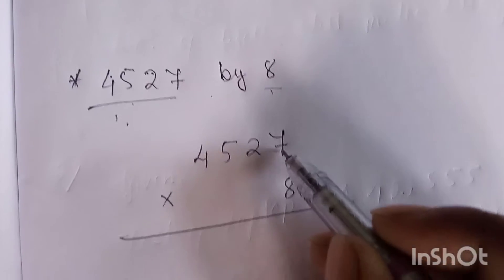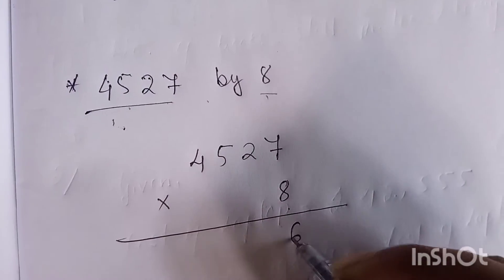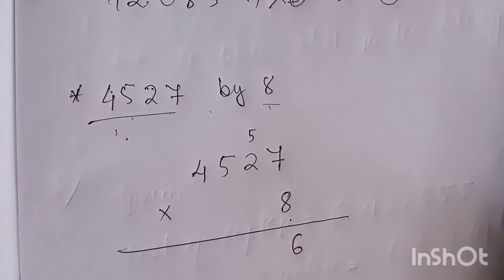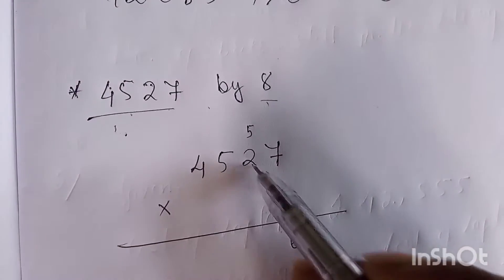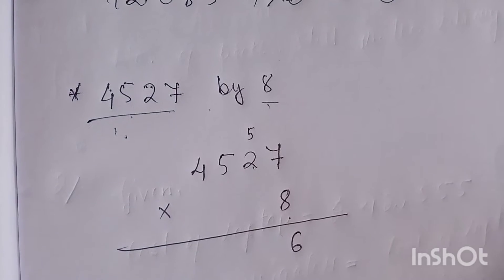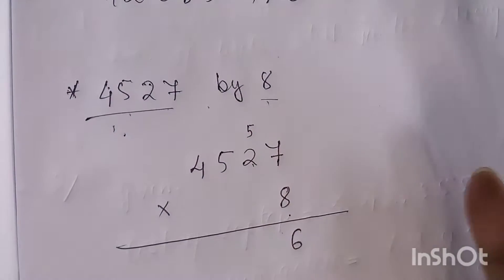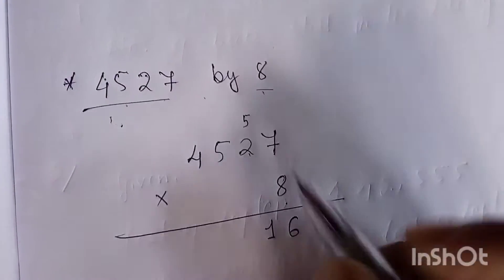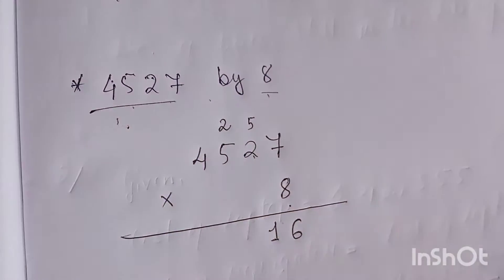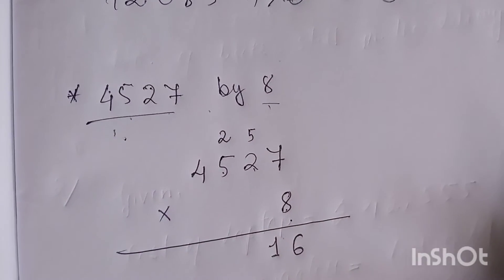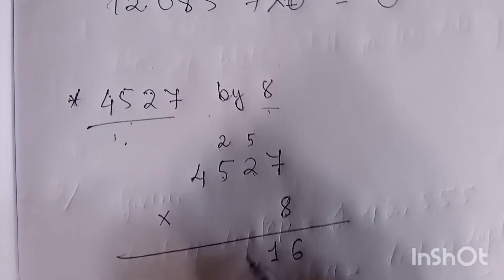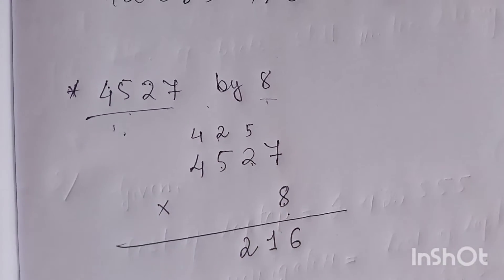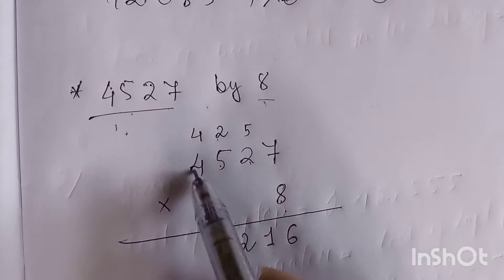Seven eights are fifty-six — write six and carry five. Eight twos are sixteen, plus five carried, twenty-one — write one and carry two. Five eights are forty, plus two carried, forty-two — write two and carry four.